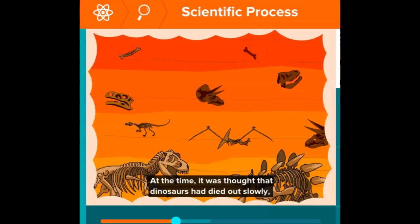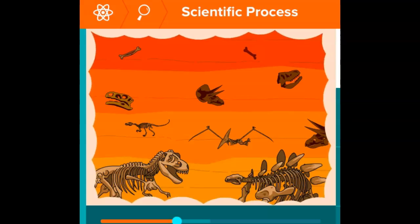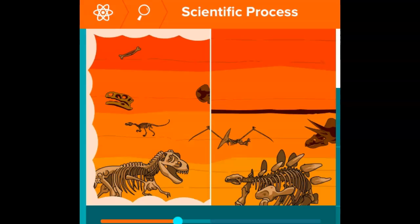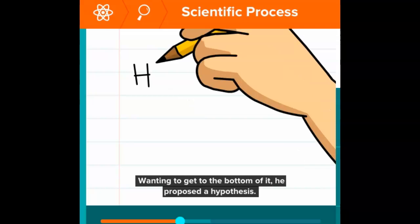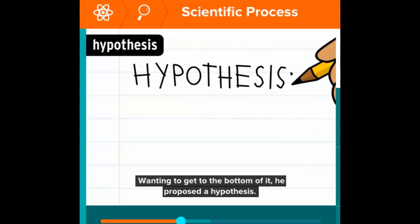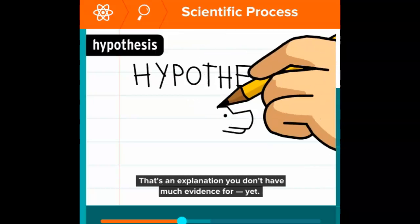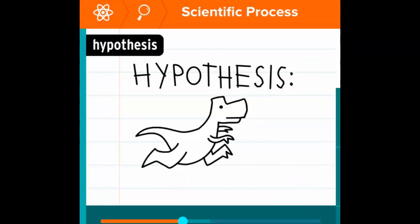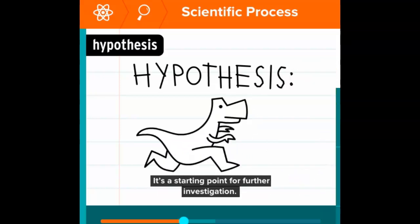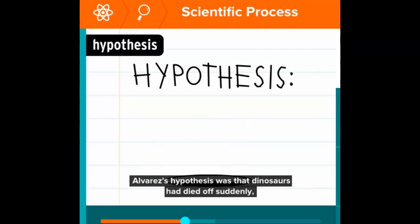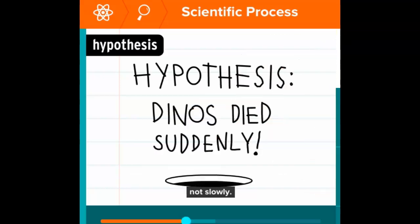At the time, it was thought that dinosaurs had died out slowly over millions of years. But Alvarez's rocks seemed to tell a different story. Wanting to get to the bottom of it, he proposed a hypothesis—that's an explanation you don't have much evidence for yet, it's a starting point for further investigation. Alvarez's hypothesis was that dinosaurs had died off suddenly, not slowly.